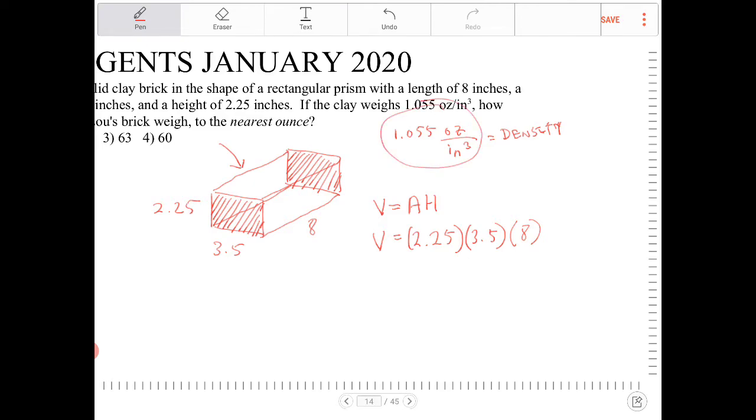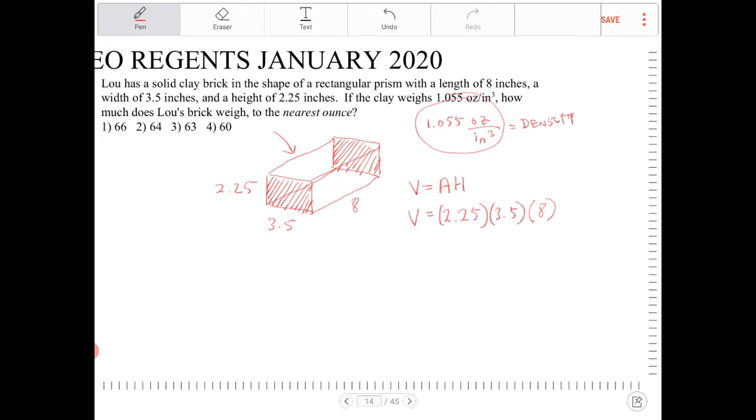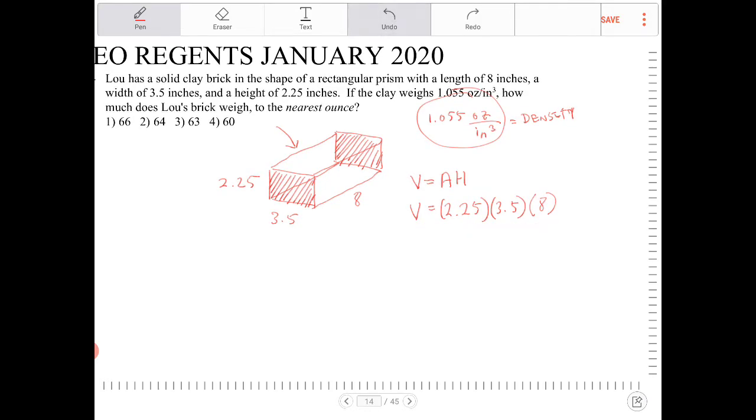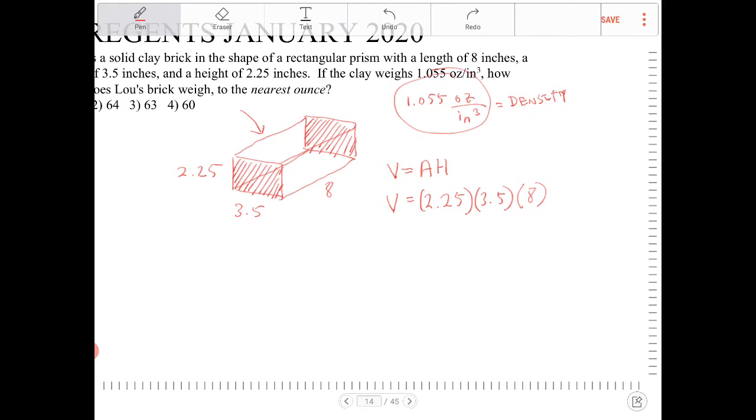Notice that I have 1.055 ounce per inch cubed, and I want to figure out what is the weight. The information, the thing that I found over here, using a little bit of dimensional analysis here, all of these dimensions are measured in inches. So that means my final quantity is going to be in inches as well, but it's going to be inches cubed. So let's figure out what this is.